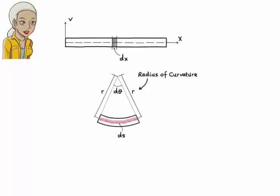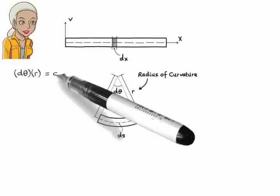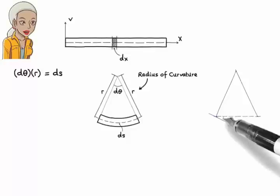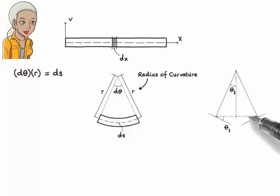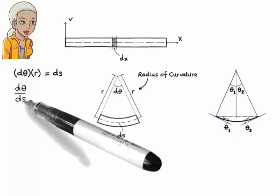Then, we can write angle dθ times r equals ds. By the way, dθ is the difference between θ1 and θ2, where θ1 is the tangent angle of the left end of the slice and θ2 is the tangent angle at the right end of the slice. Let's rewrite this equation as dθ/ds equals 1 over r.